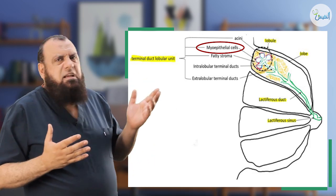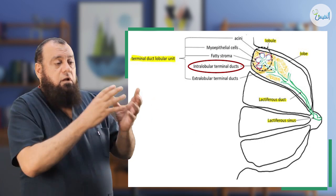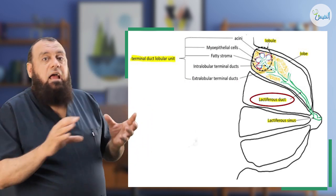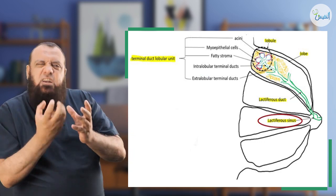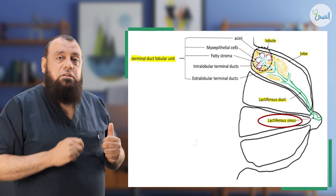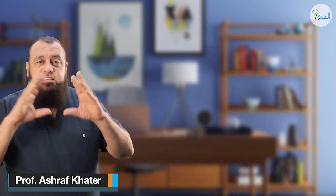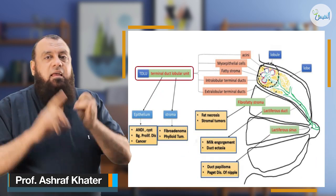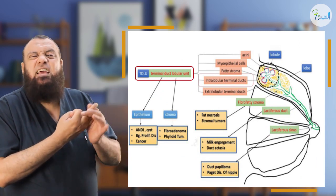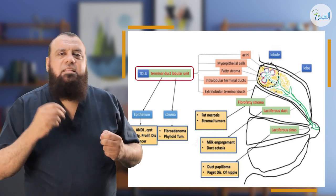What is the duct system? The duct system arises by small ductules from the acini into what we call intralobular ducts. The intralobular ducts unite to form extralobular ducts, and these extralobular ducts unite to form what we call lactiferous ducts. The lactiferous ducts produce what we call the lactiferous sinus just before the nipple. The lactiferous sinus, which is a dilatation, opens directly into the nipple.